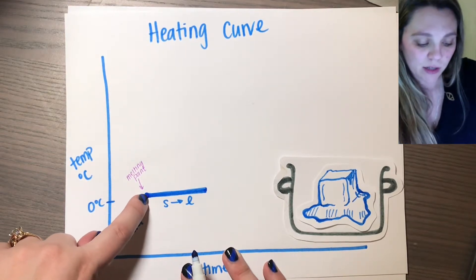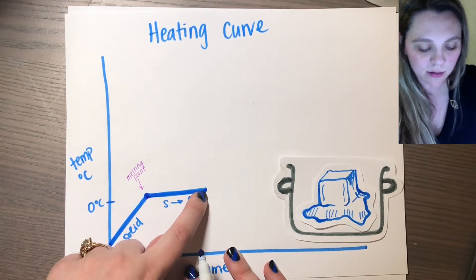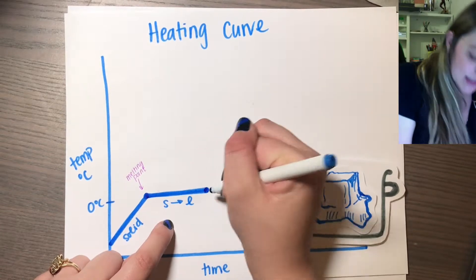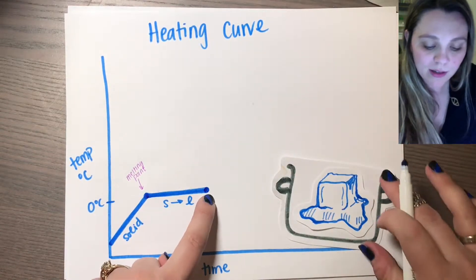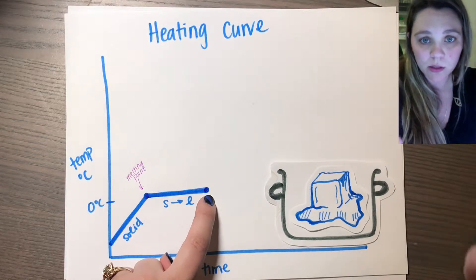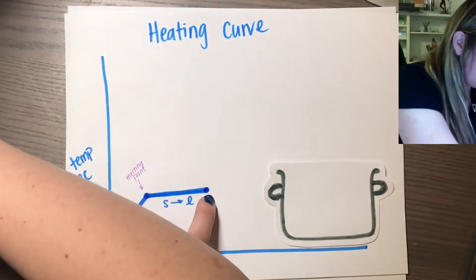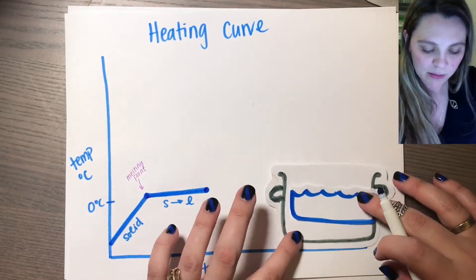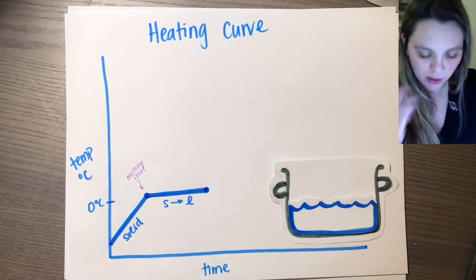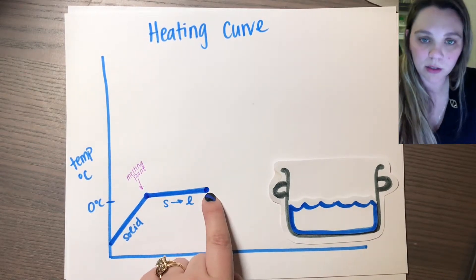Then I start getting both a solid and a liquid throughout this whole phase change, until I hit this point right here. At that point, everything has melted — my whole solid is no longer a solid anymore, the entire thing has melted into liquid water. So now I'm completely 100% liquid at this point.